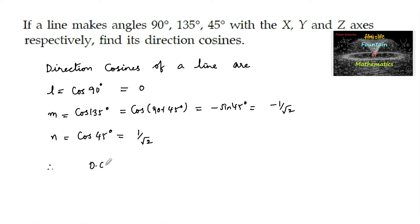Therefore, direction cosines of the given line are 0, minus 1 by root 2, and 1 by root 2.